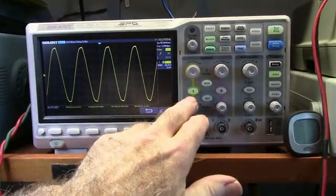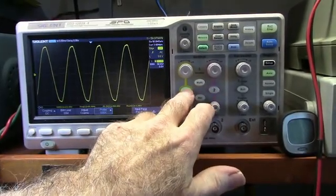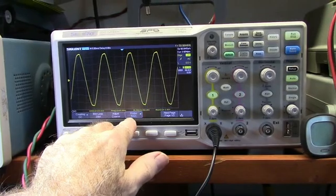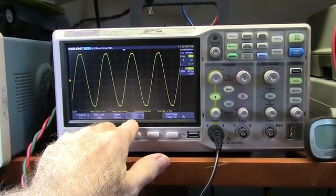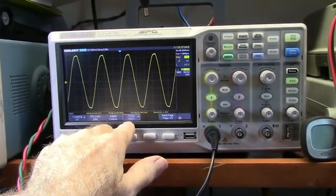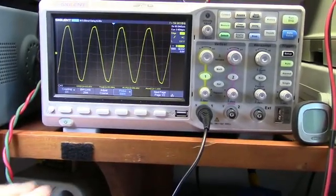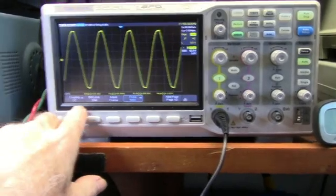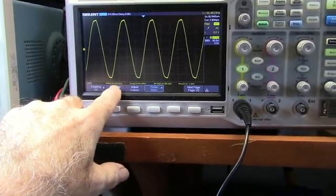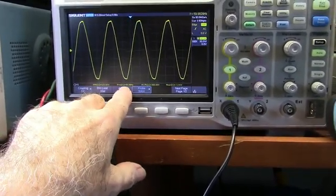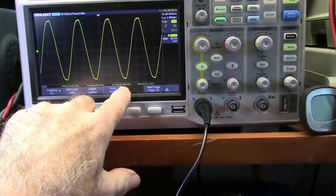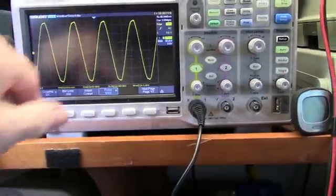One thing you have to do is make sure that your probe is set to the type of probe you're using. Now I'm on the times 500 on the differential probe, so I have to set my probe to 500. So now I'm reading 122 volts RMS, 59.9 cycles, peak to peak is 350 volts.